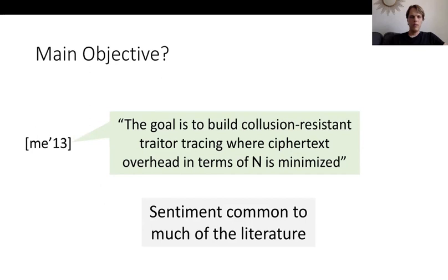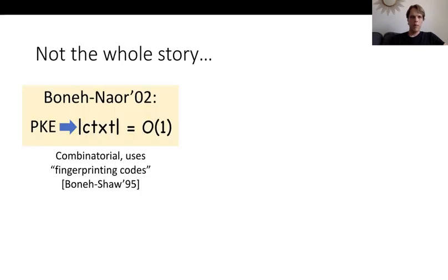However, this is not the entire picture, because in 2002, Boneh and Naor showed how to use general public key encryption to get a traitor tracing scheme where the ciphertext overhead is actually very small — just two ciphertexts, in particular constant and independent of the number of users. So what have we been doing for the last 18 years if we've already solved the problem of small ciphertext size?